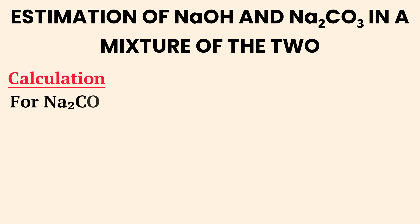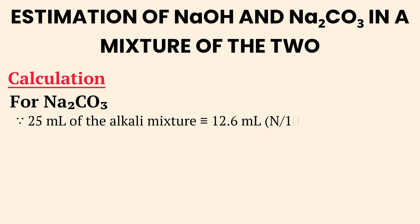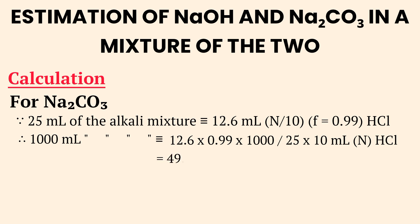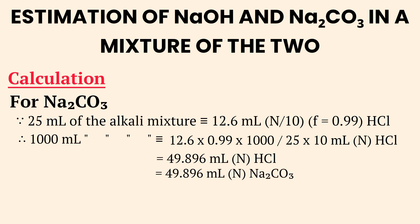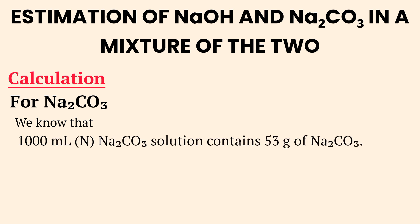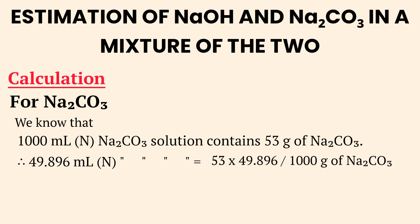For sodium carbonate calculation: 25 mL of the alkali mixture requires 12.6 mL of N/10 HCl with correction factor F = 0.99. For 1000 mL: 12.6 × 0.99 × 1000 ÷ (25 × 10) = 49.896 mL of normal HCl, equivalent to 49.896 mL of normal Na2CO3. Since 1000 mL of normal sodium carbonate solution contains 53 g of Na2CO3, the amount in 49.896 mL = 53 × 49.896 ÷ 1000 = 2.645 grams of sodium carbonate.